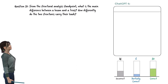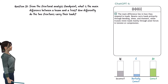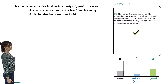From the structural analysis standpoint, what is the main difference between a beam and a truss? How differently do the two structures carry their loads? ChatGPT responded: the main difference lies in how they respond to loads — beams carry loads primarily through bending, shear, and moment, while trusses resist loads mainly through axial forces in tension or compression. That is a correct response.